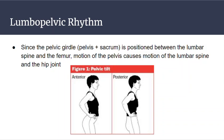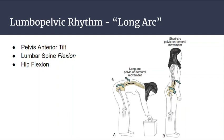Here we're looking at what they call short arc pelvic tilt anterior — or what some people call duck butt — and posterior, when you're pushing your tush back into your pants. Long arc is when your pelvis is moving. In this case it's anterior, but you're also having lumbar spine flexion. This is the type of movement when you're leaning over to pick something up: anterior pelvic tilt, lumbar spine flexion, and hip flexion.